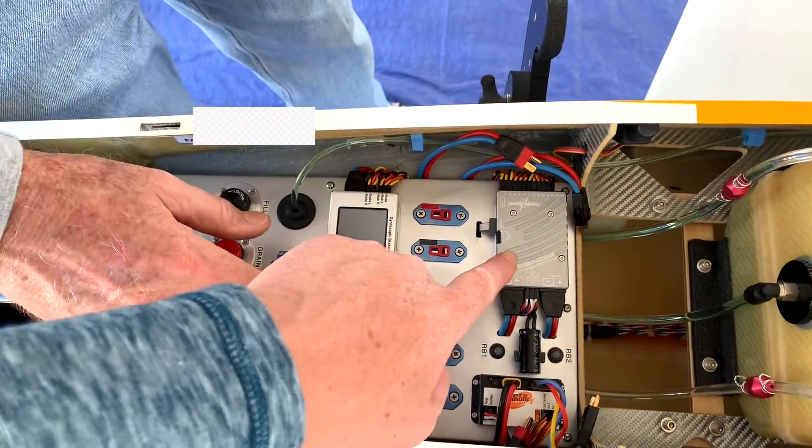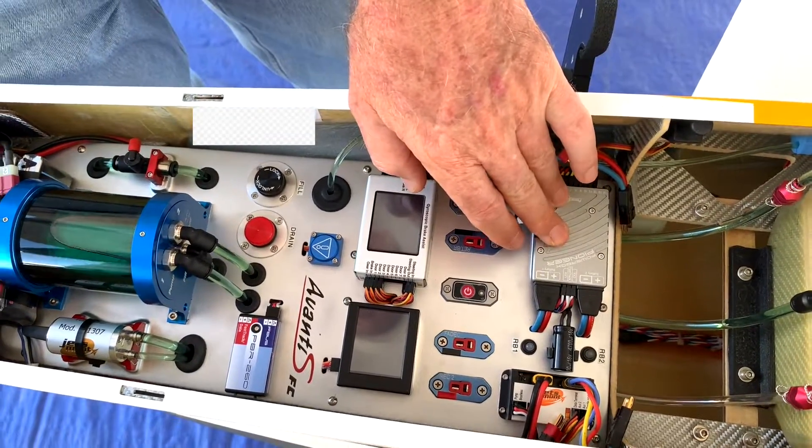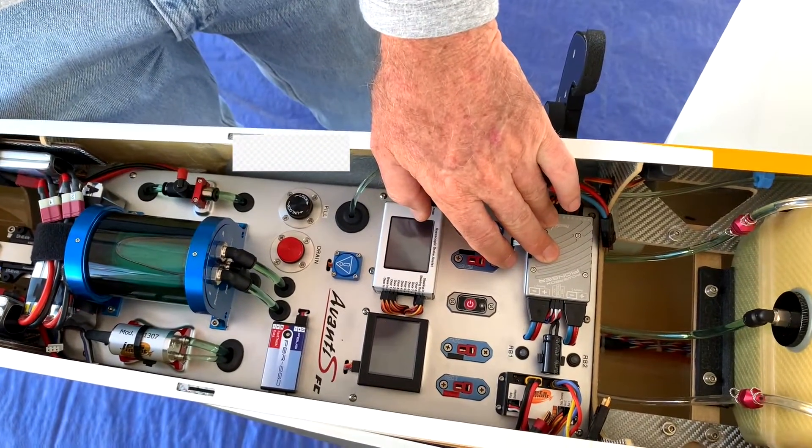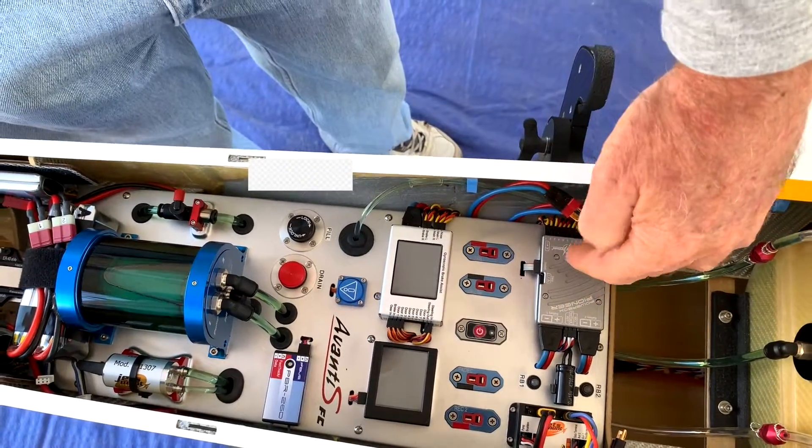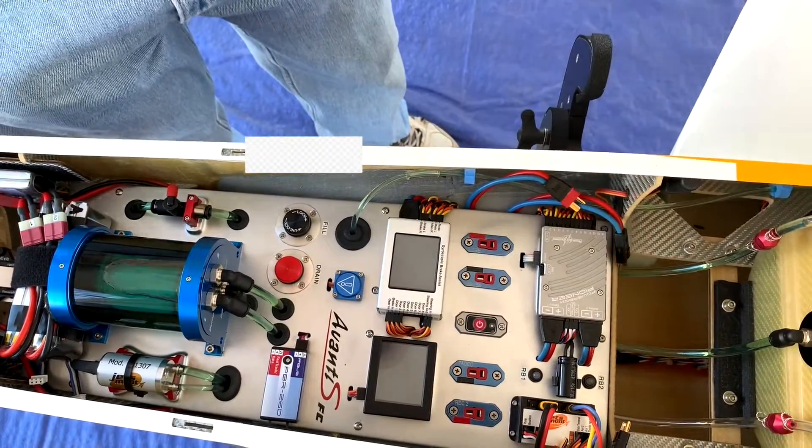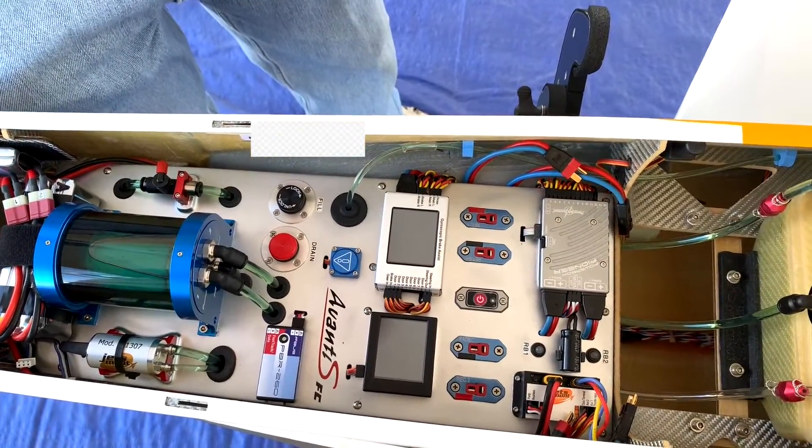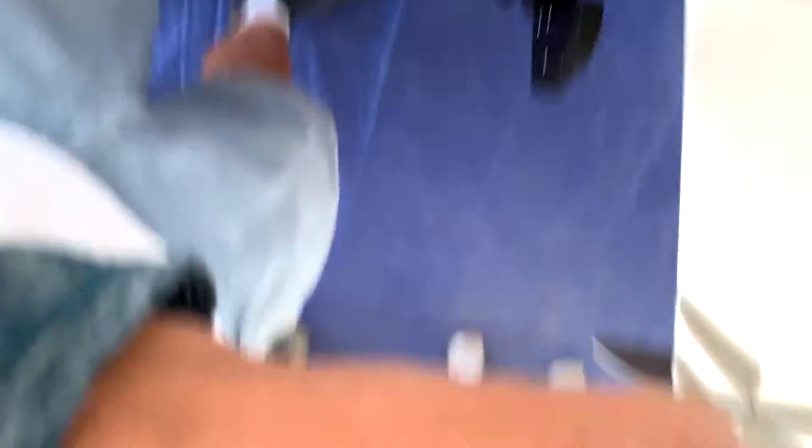What is this display? This is a voltage distribution unit. Basically the battery power comes into this and it distributes it out to all the servos that control the control surfaces, and it also has the radio.